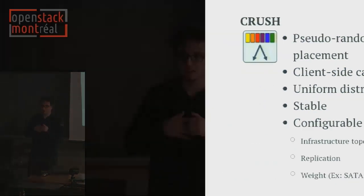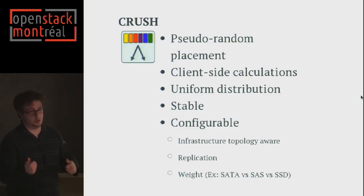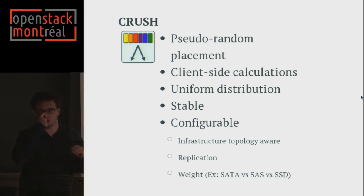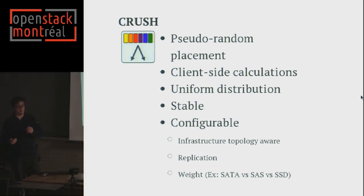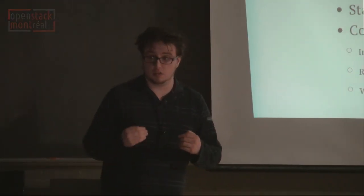CRUSH is configurable — it can be infrastructure topology-aware. In Ceph, you can define that these servers live in this rack, this row, this room, this data center. That allows you to do replication to different failure domains — for instance, three replicas with one in another data center. You can configure replication: two, three, four, or none. And you can weight your different OSDs — if you have faster drives and want data cycled through them more, you can weight those drives higher, or weight them down so they're used less.